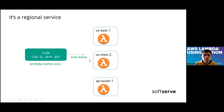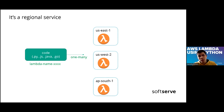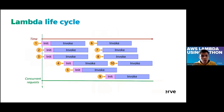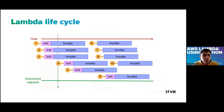The main point is that your code could be deployed in different regions, and you can use the same name in those regions. The life cycle of the Lambda is the next topic.